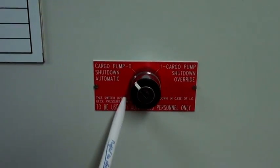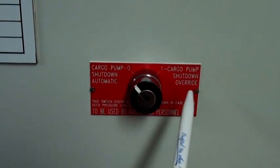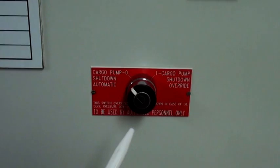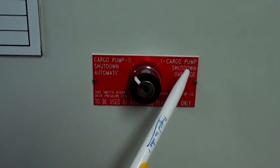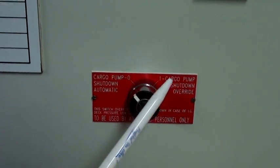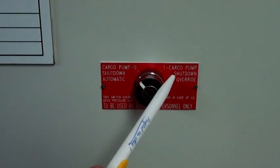In case the IG has low-low pressure on deck, you can switch over to cargo pump shutdown overriding and the system will not shut down the cargo pumps. But this should be made only according to the company policies.